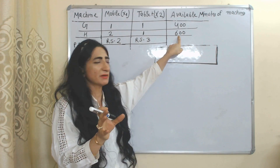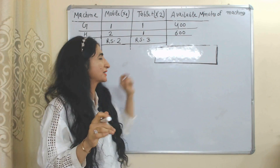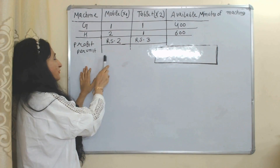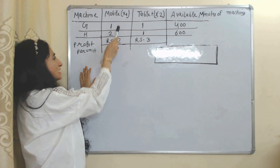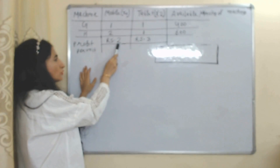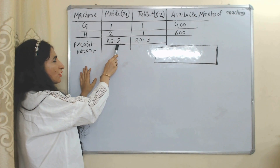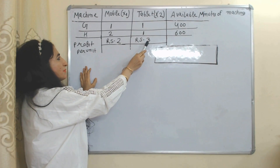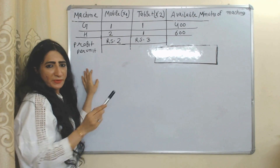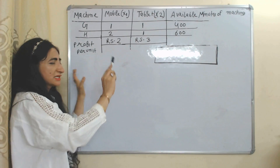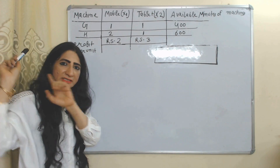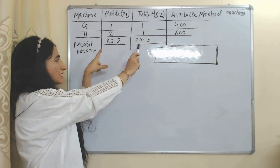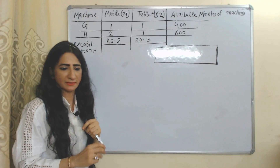We also have per-unit profit in the table. Mobile gives 2 rupees per unit profit, and tablet gives 3 rupees per unit profit. All these things we have already discussed, and based on this problem, we made the table.